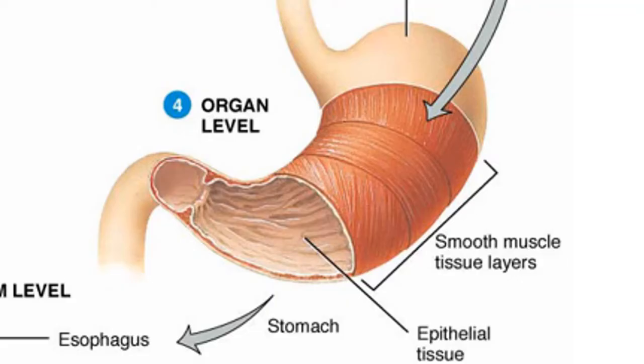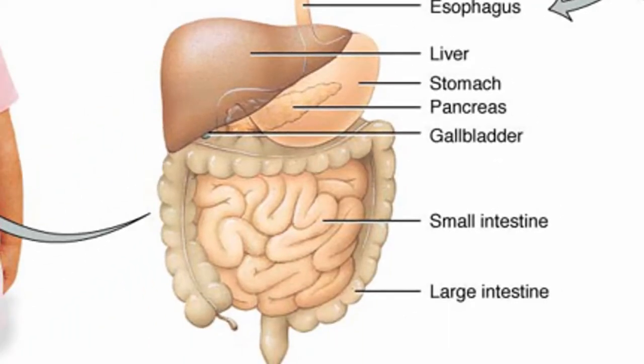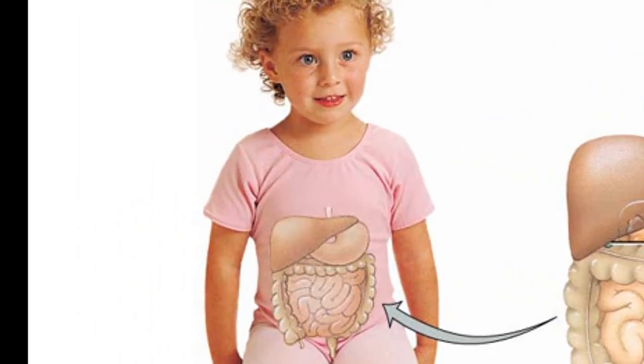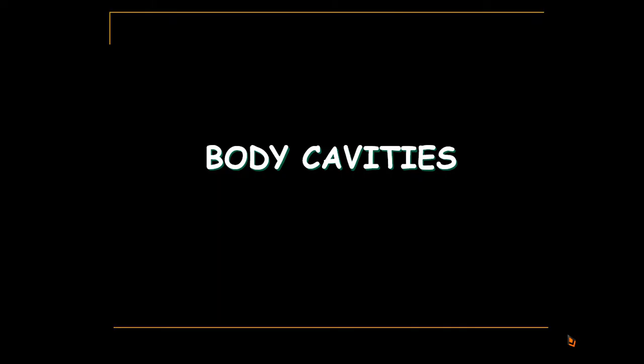collect together to form an organ like the stomach, which performs a particular function such as reservoir and digestion of food. Then when different organs like the stomach, the pancreas, the liver, and the intestine group together, they form a system like the digestive system, which lies inside the human body. Inside our body there are cavities.